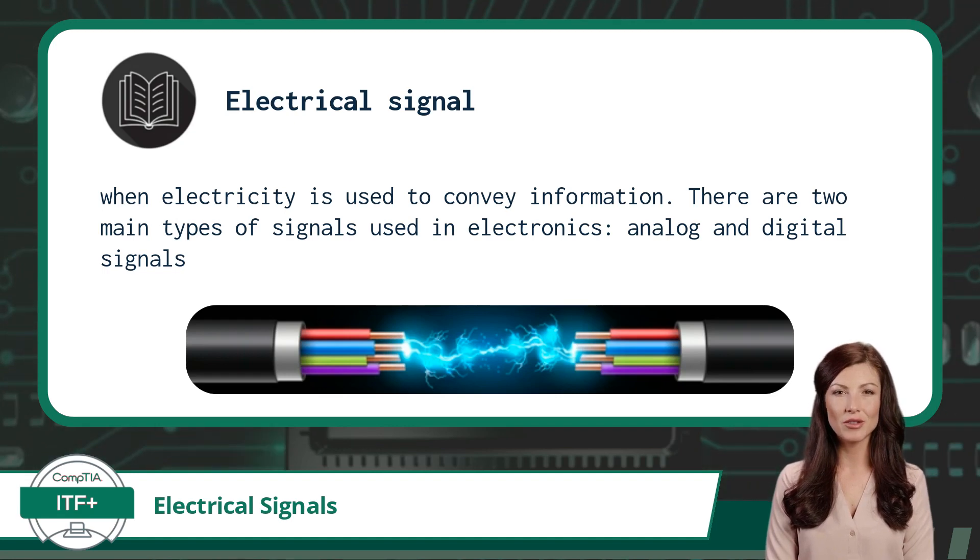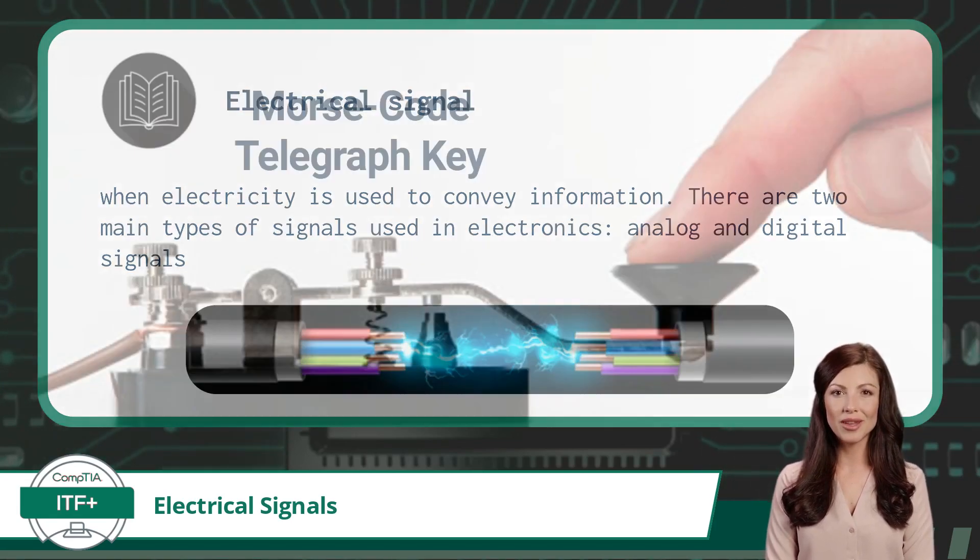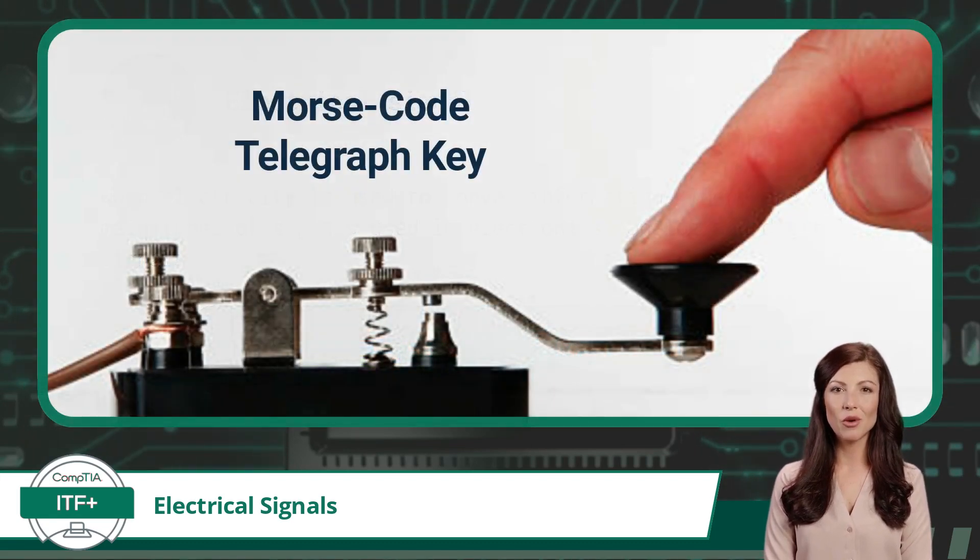So what is an electrical signal? An electrical signal is when electricity is used to convey information. This is usually accomplished by manipulating the electrical property voltage up and down as it travels across a medium, such as a copper wire. The most basic example of this was sending Morse code across a wire back in the day.